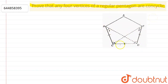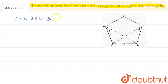CD is common, and here BC is equal to AD because all sides of a pentagon are equal, and here angle C is equal to angle D because all angles of a pentagon are equal. So in triangle BCD and in triangle ADC,